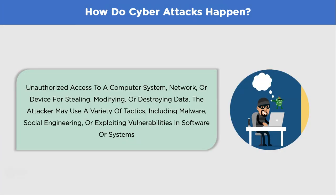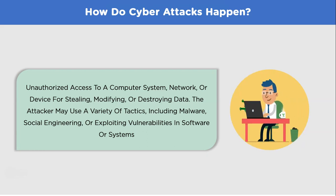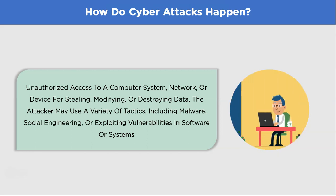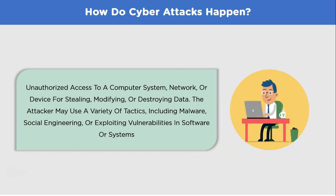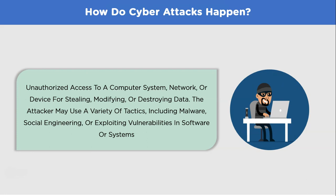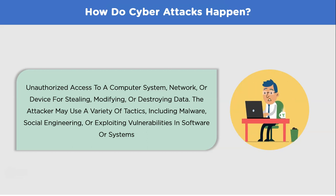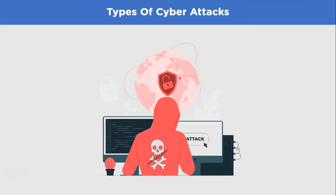How do cyber attacks exactly happen? Cyber attacks are orchestrated processes that aim to compromise the security and integrity of computer systems and digital data. Attackers gather information about their targets, identifying potential vulnerabilities, security weaknesses, and valuable data they can exploit. This phase involves passive techniques like searching publicly available information and active techniques like scanning for open ports on the target network. Regular security assessments, timely software updates, user awareness training, and implementing robust security measures are essential in mitigating the risk of cyber attacks. Here are the common types of cyber threats prevalent today.